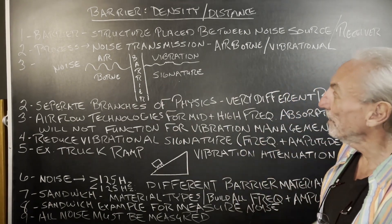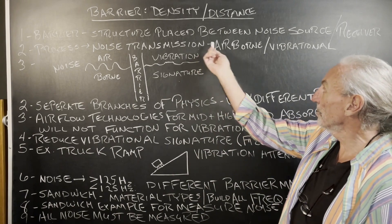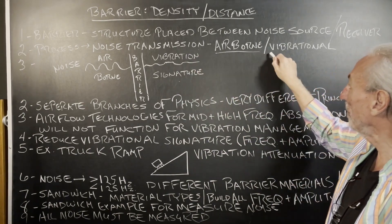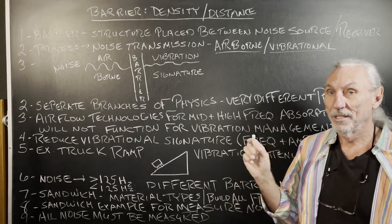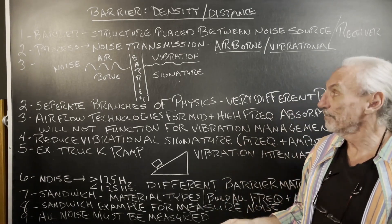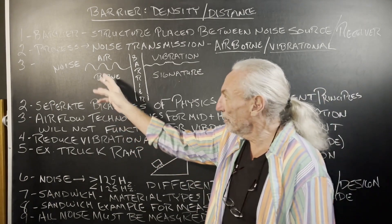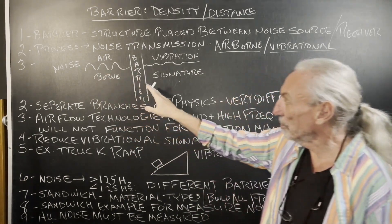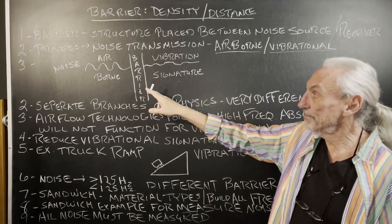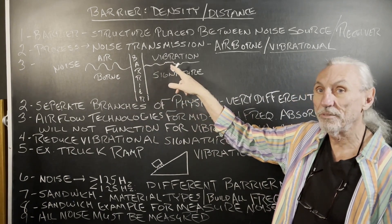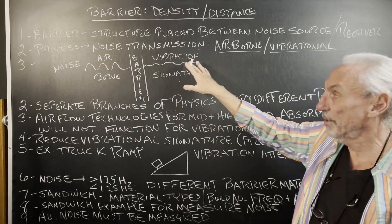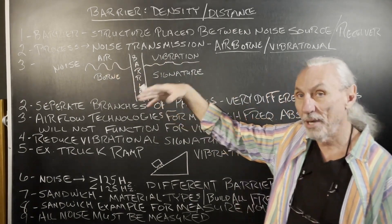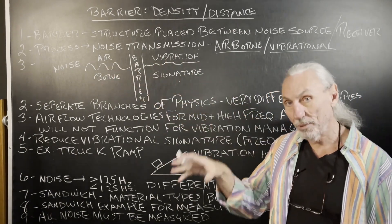It could be all kinds of combinations. The process is called noise transmission. Airborne energy transfers to vibrational energy. Different things here, and this is where people get mixed up. So you have a noise source. Airborne energy hits your wall, which is the barrier. It then turns into vibrational acoustics. It goes from airborne to vibration. Same branch of physics, but different principles applied.